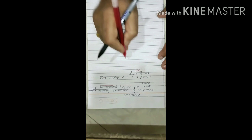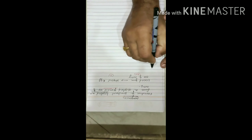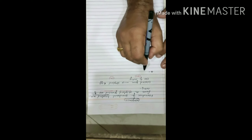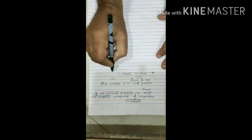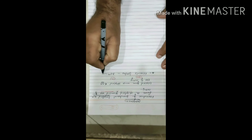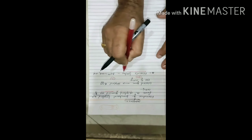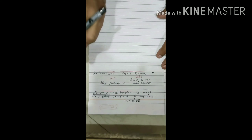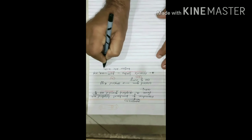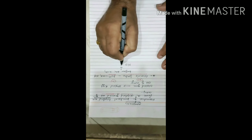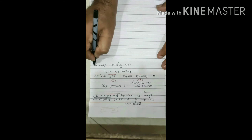The diploid germ cell of the ovary is 2N, and the haploid egg is N. This process starts when the female fetus is only 25 weeks old, meaning it starts before birth. No oogonia is formed after birth.